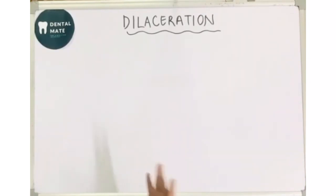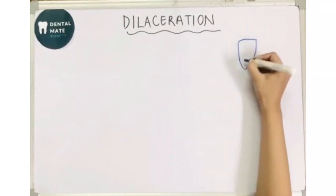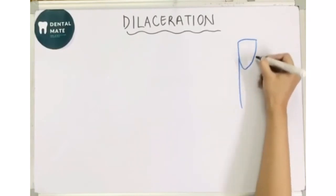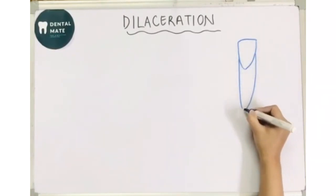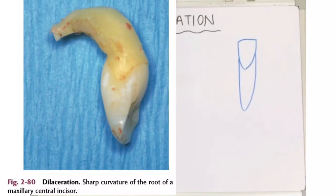Usually this abnormal angulation or bend is seen in the roots, in the root of the tooth, and sometimes it could also be seen in the crown of the tooth, less frequently in the crown of a tooth. Now what do you think can cause this dilaceration?